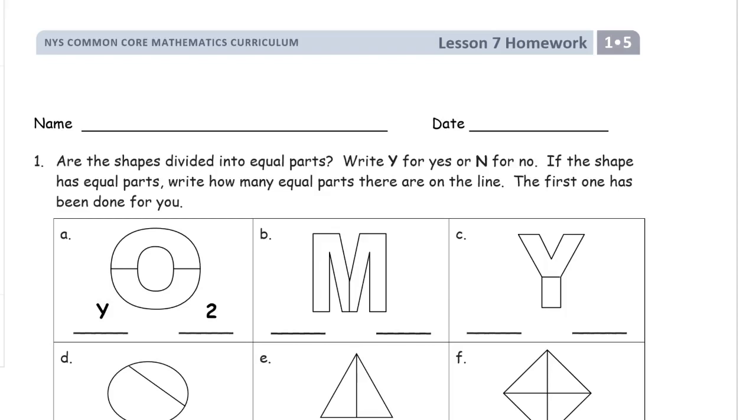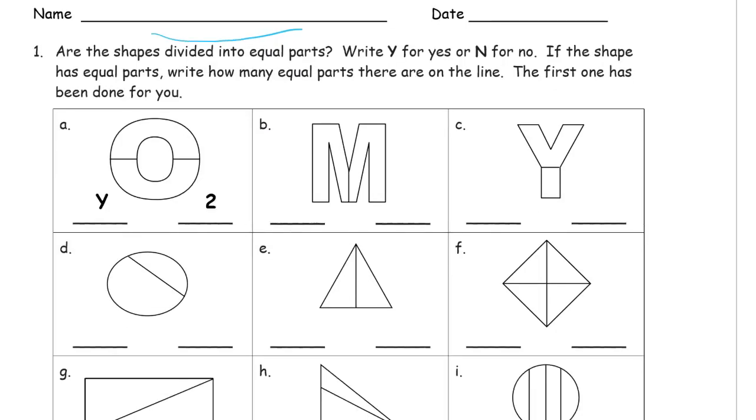Welcome to the homework for Lesson 7. This is Module 5 of Grade 1. Name goes here first please. Are the shapes divided into equal parts? Write Y for yes or N for no. If the shape has equal parts, write how many equal parts there are on the line. The first one has been done for you.